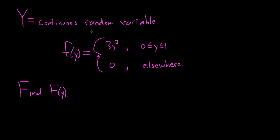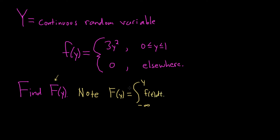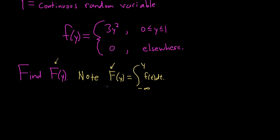In this problem we have Y, a continuous random variable, and we have the density function f(y) given by this piecewise function. The question is to find the distribution function capital F. Little f of y is equal to 3y² if y is between 0 and 1, and otherwise it's equal to 0.